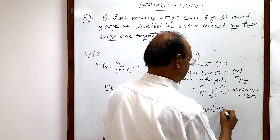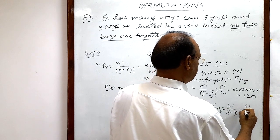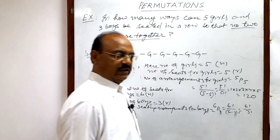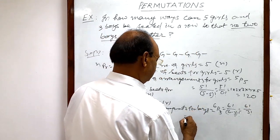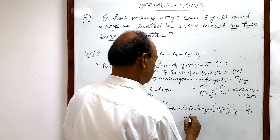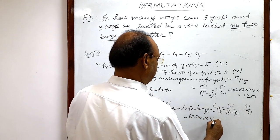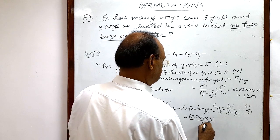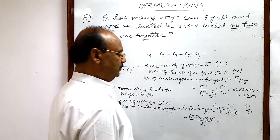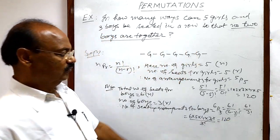This is equal to six factorial by six minus three factorial. So six factorial by three factorial. And this is equal to, three factorial will be cancelled out with the six factorial. So six into five into four into three factorial divided by three factorial. And this is equal to 120.